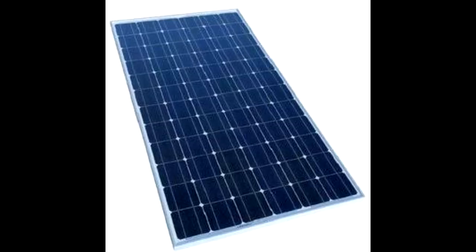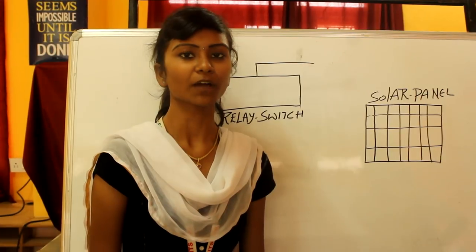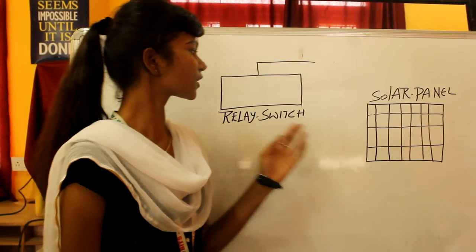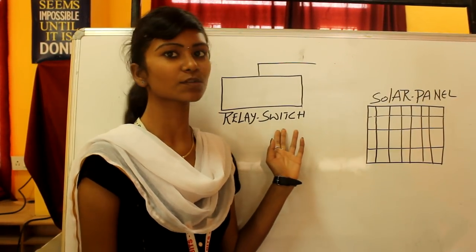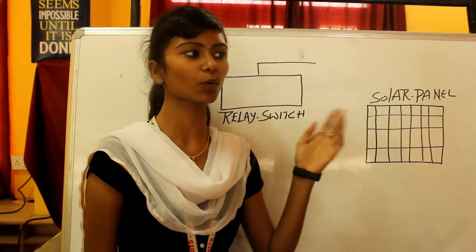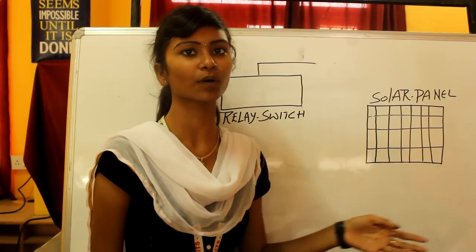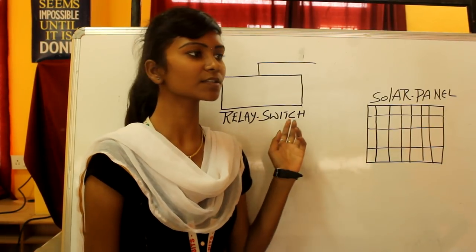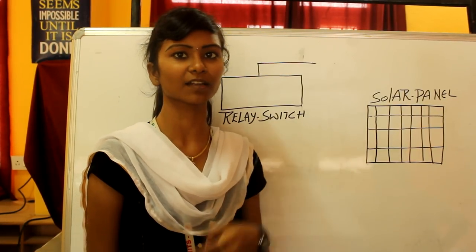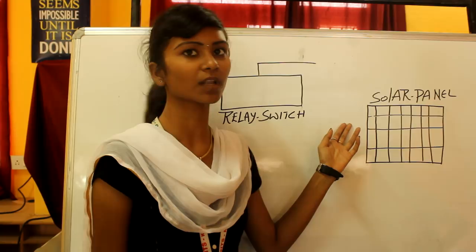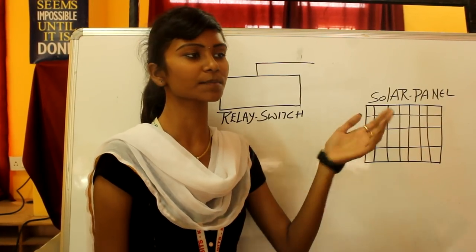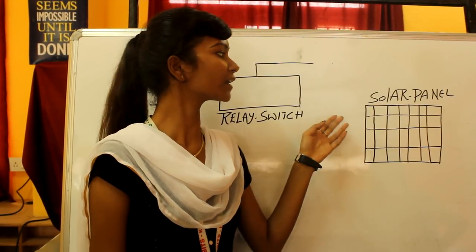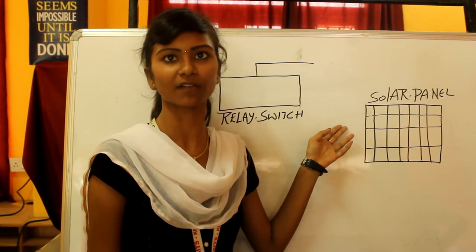I would like to express the functionalities of the relay switch and solar panel. The relay switch is used to detect when anyone tries to open the box, and then it sends alerts to our mobile phones. The solar panel is used to absorb heat and provides power through the power supply.